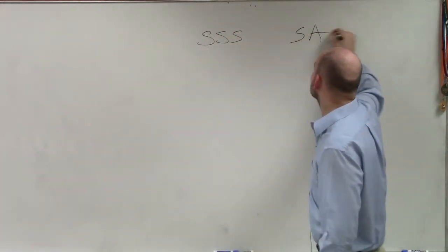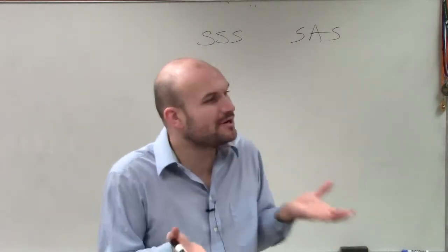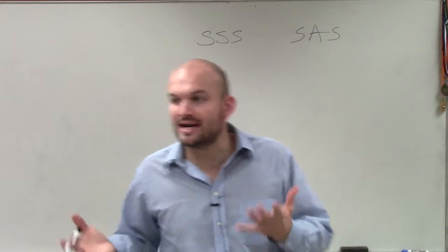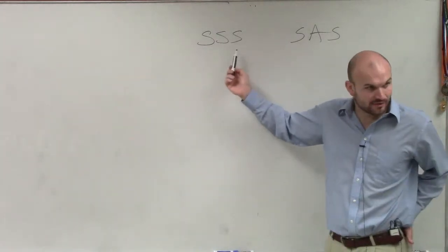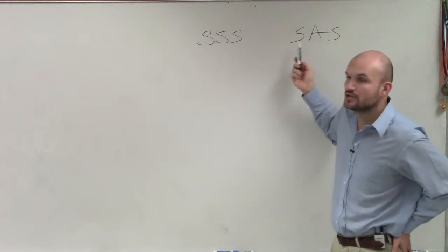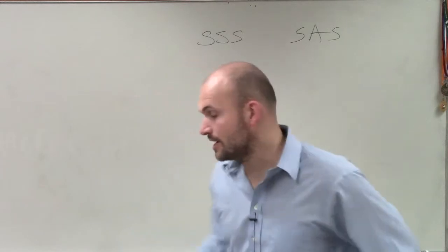And side, angle, side, alright? We could prove congruence by looking at proofs. When we were looking at proofs, we wanted to look for two triangles that had all three sides that were in common, or two sides and an included angle. Now we're going to work on two different congruences, alright?